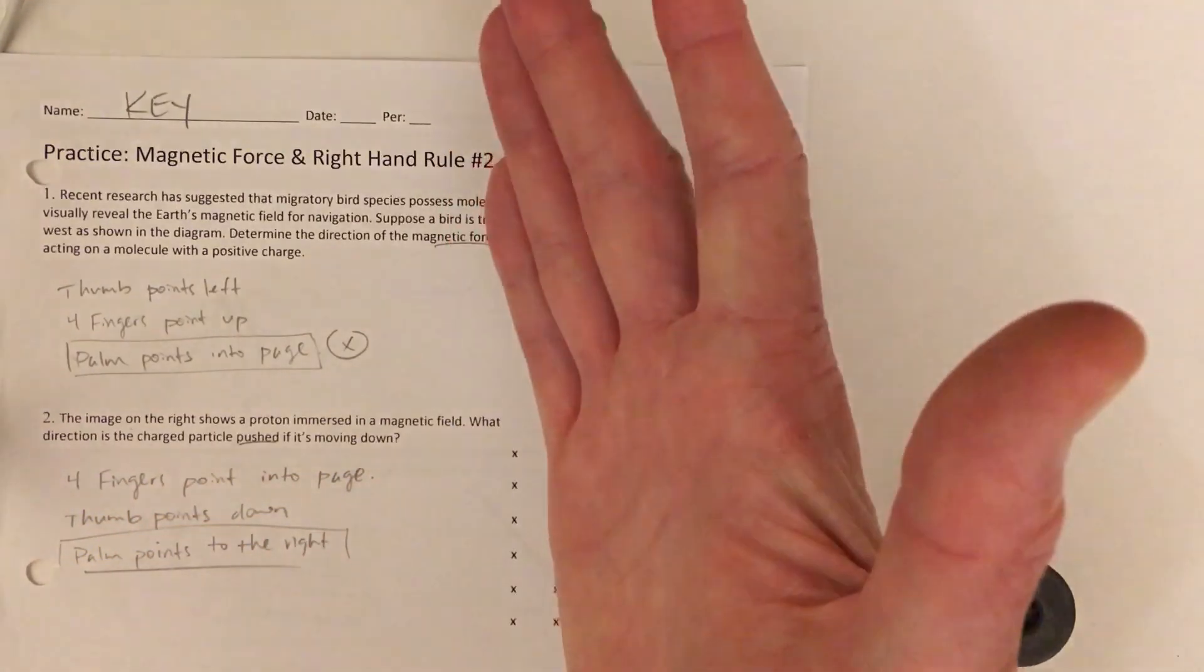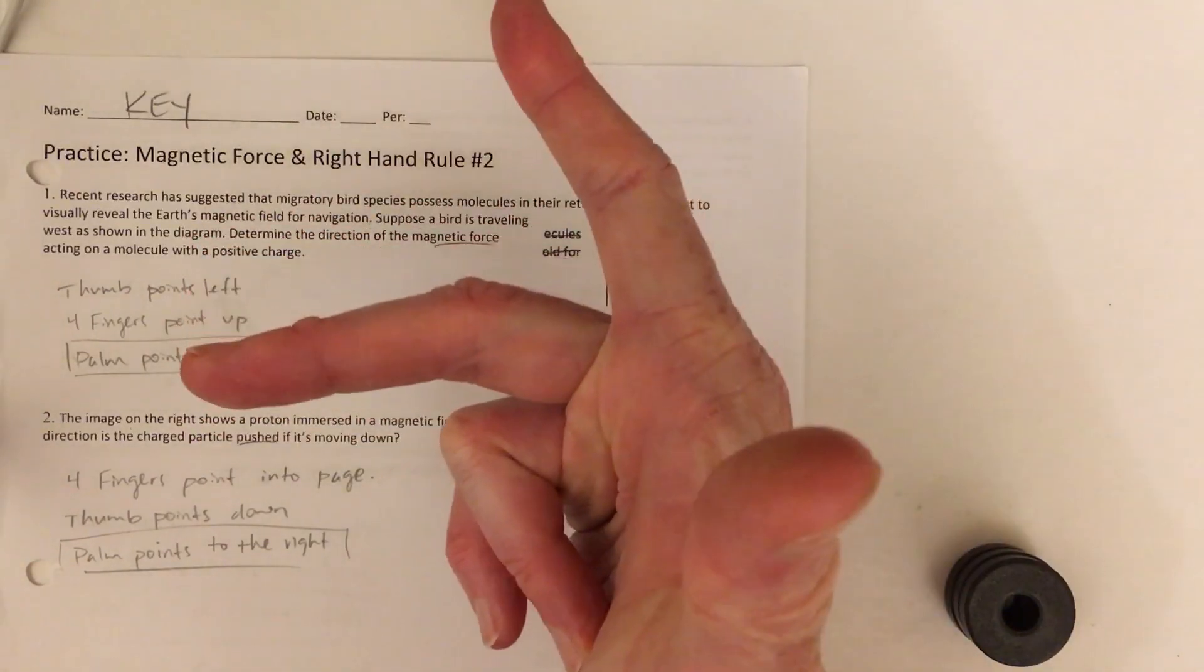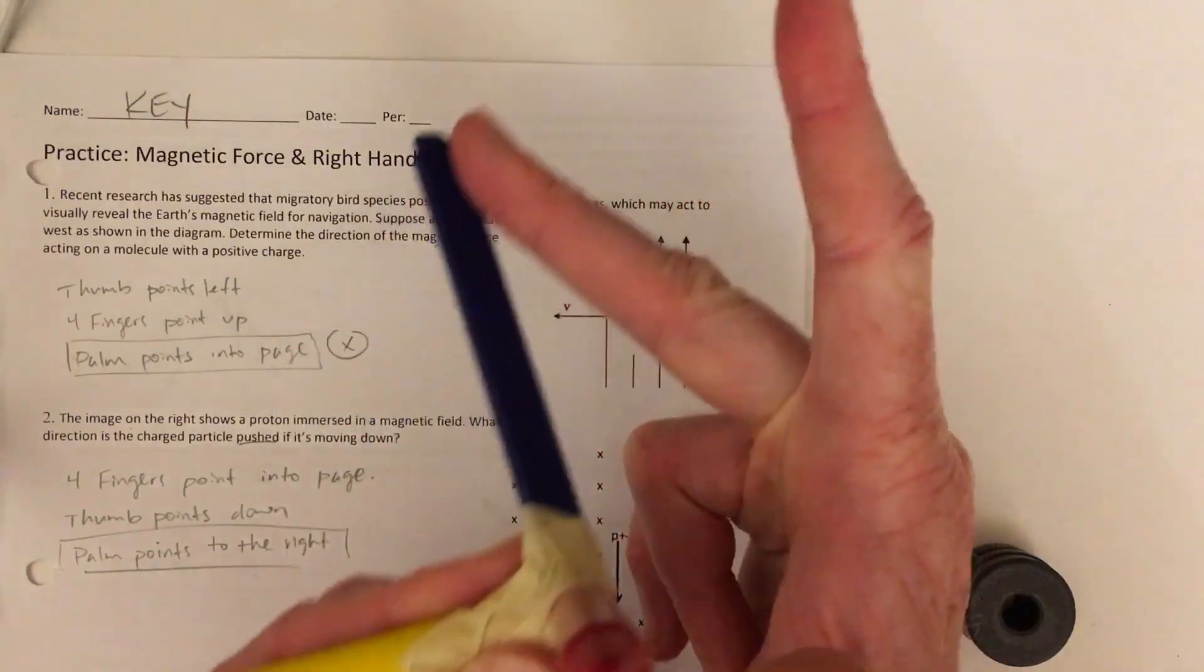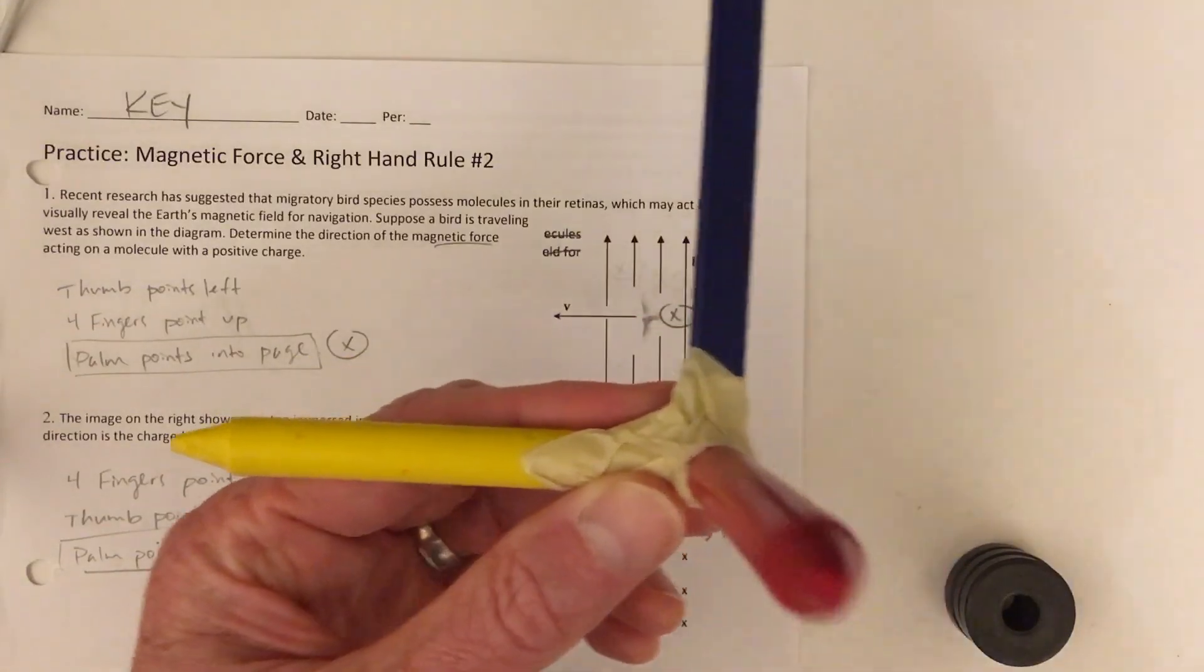By the way, some people also teach the right hand rule like this, where this is obviously pointing up, this is pointing out, and then they just turn the middle finger in the direction of the third vector.